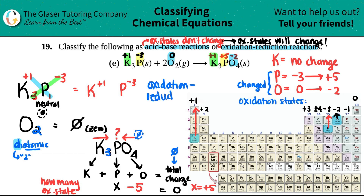Since the charges changed from one side to the other, it's automatically an oxidation-reduction reaction. There's no acid-base here because we saw a change in those charges. If there was no change, it would be an acid-base. Let me know in the comments if this helped you out. Good luck on your tests coming up, and I'll talk to you soon. Have a great day!